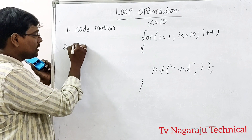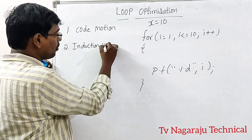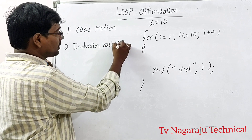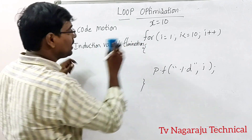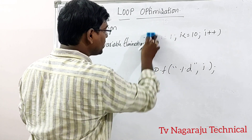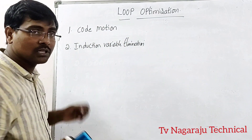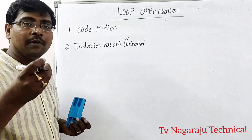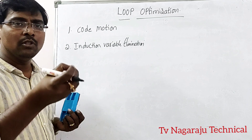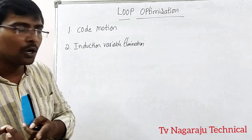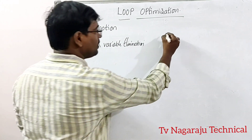The second technique is induction variable elimination. An induction variable refers to unnecessary variables within the loop. If you are using some additional variables inside a loop that are not needed, we need to eliminate such variables.